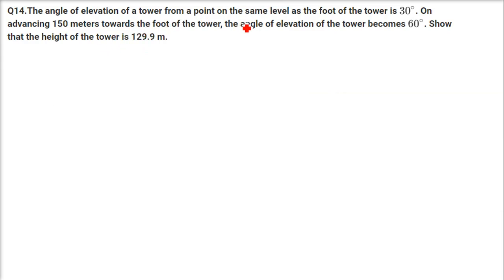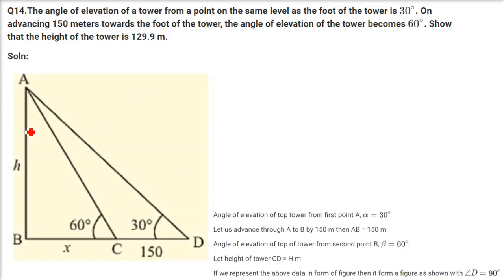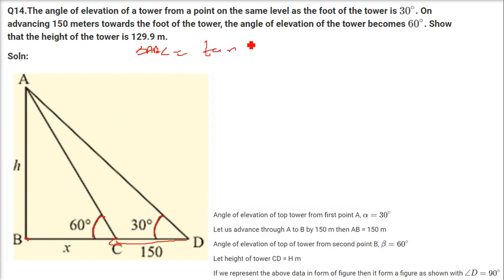The angle of elevation of a tower from a point at the same level as its foot is 30 degrees. On advancing 150 meters towards the foot, the angle of elevation becomes 60 degrees. Show that the height of the tower is 129.9 meters. Taking triangle ABC first: tan 60 equals H divided by X, and since tan 60 is root 3, H equals root 3 times X. So X equals H divided by root 3 — this is our first equation.